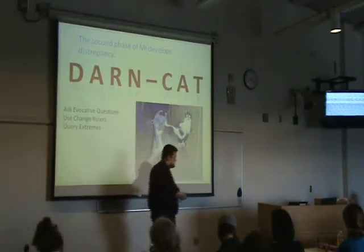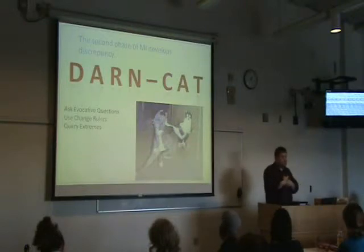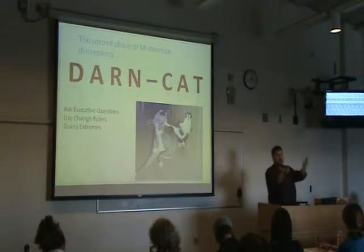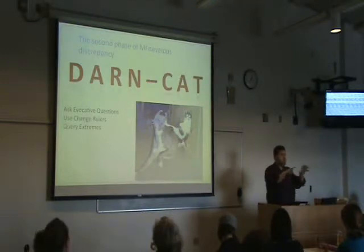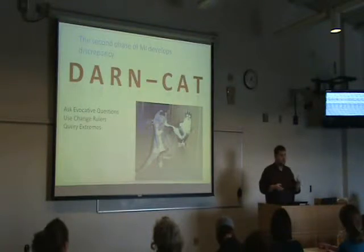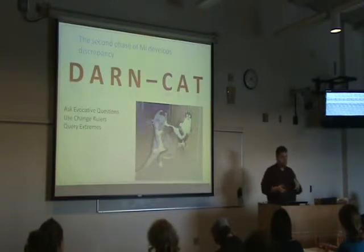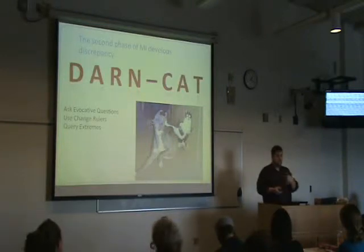Briefly, a change ruler is where you say, 'How important is it to you to make a change in your diabetes management on a scale of 0 to 10?' They might say 5. The key is you then say, 'I'm curious — how come you're a 5 and not a 3?' The natural response is about why you're higher than you might be — people give you reasons. For example: 'It's important to me because my feet are starting to get numb and that really scares me.'